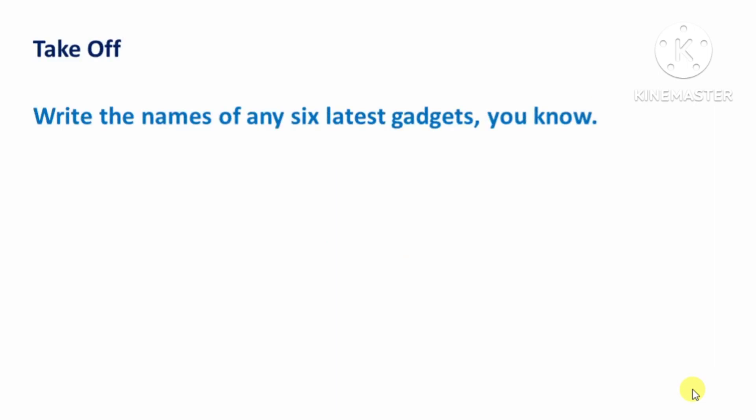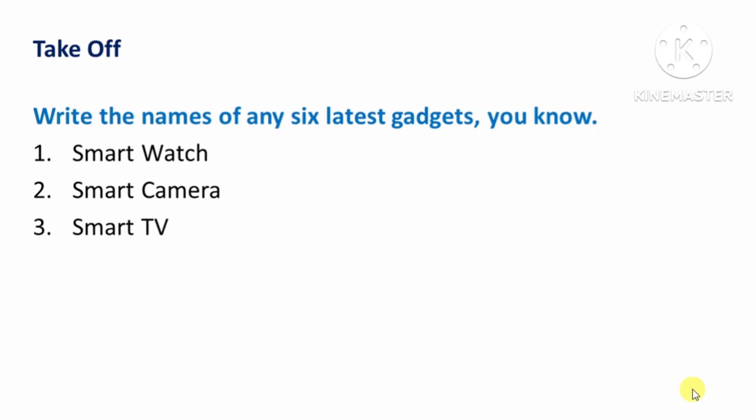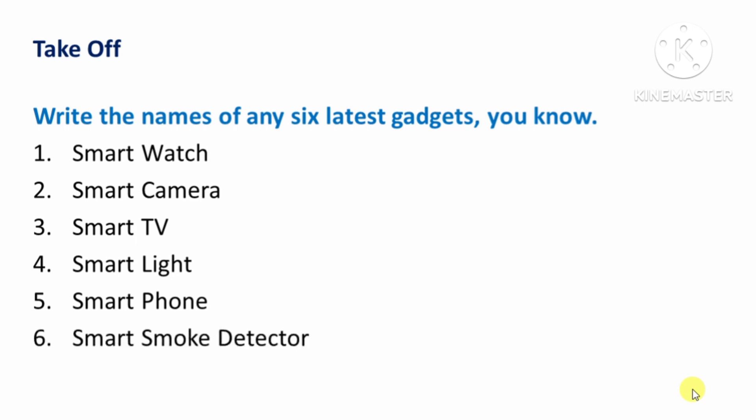Question: Write the names of any 6 latest gadgets you know. Answer: First, Smart Watch. Second, Smart Camera. Third, Smart TV. Fourth, Smart Light. Fifth, Smart Phone. Sixth, Smart Smoke Detector.